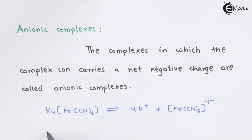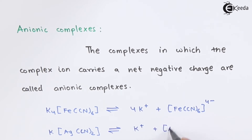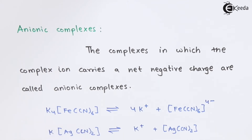Another example is K[Ag(CN)₂]. When ionized, it forms one mole of K⁺ along with [Ag(CN)₂]⁻. The K⁺ carries a positive charge, so the complex ion carries a minus-one charge to maintain overall neutrality. Since the complex ion carries a net negative charge, this is also an anionic complex.